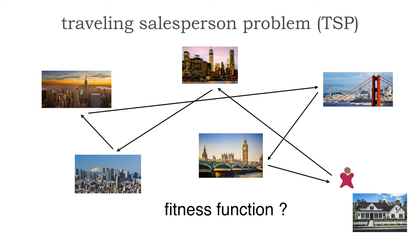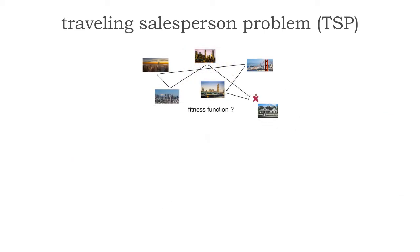Take a moment to think about what you would measure and what fitness functions you would create. Some of the ones you might come up with: certainly distance is a good measurement, cost might be one, and time might be another. These might be effective fitness functions depending on what's important to us.